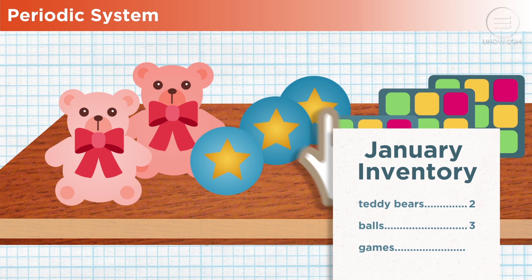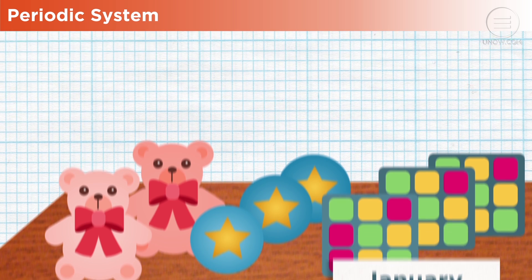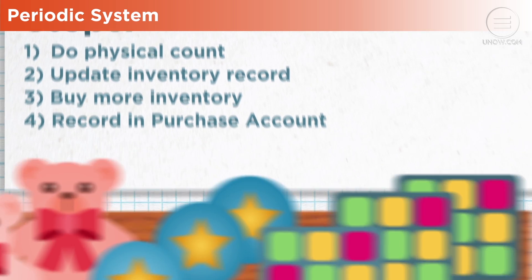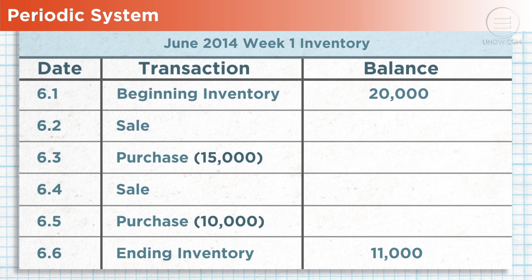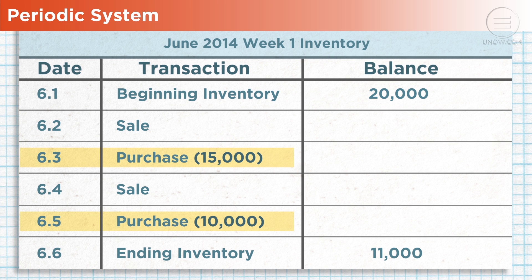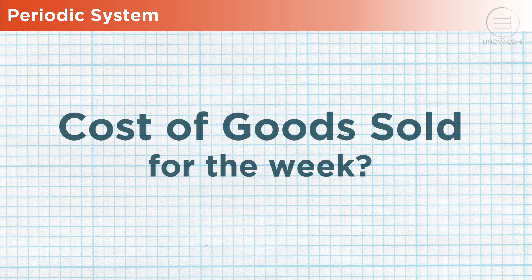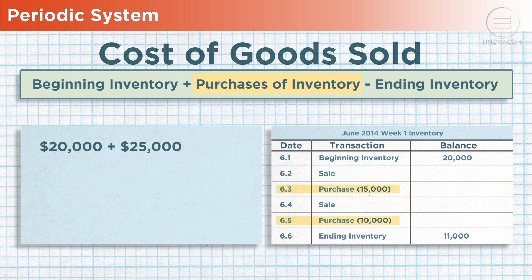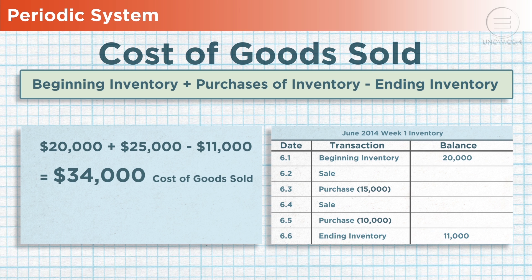In a periodic system, the cost of goods sold is calculated only when actual physical inventory counts are conducted, such as daily, weekly, or monthly. All purchases or sales of inventory made between physical counts are recorded in purchase accounts. For example, Johnson Trading Company updated their inventory last week with a balance of twenty thousand dollars. During the week they paid twenty-five thousand dollars for new purchases. This week their updated inventory shows eleven thousand dollars. Their cost of goods sold: twenty thousand plus twenty-five thousand minus eleven thousand equals thirty-four thousand dollars.